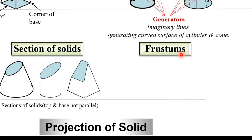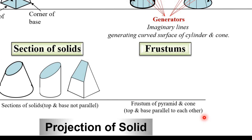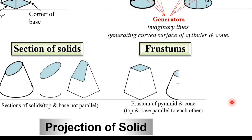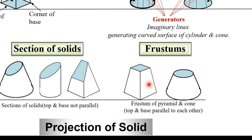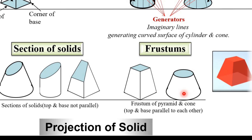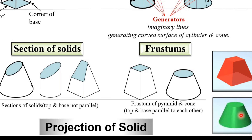The last important term is the frustum of a solid. The top and base are parallel to each other — that means the cutting plane must be parallel to the base — then the remaining portion is called the frustum of the solid. For example, a square pyramid cut by a plane parallel to its base gives a frustum of the square pyramid. Similarly, a cone cut by a plane parallel to its base gives a frustum of the cone. If the cutting plane is parallel to the base, it is a frustum; if not parallel, it is a section of solid.